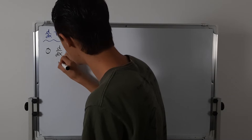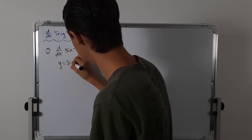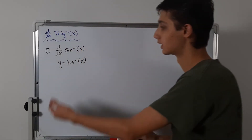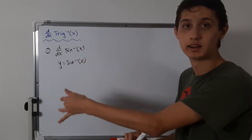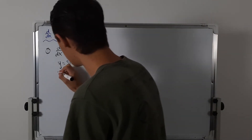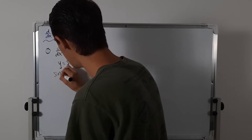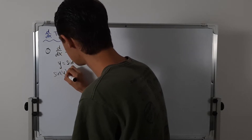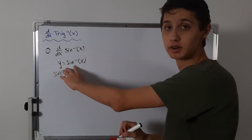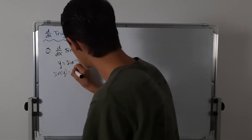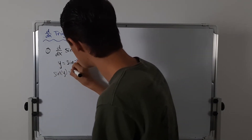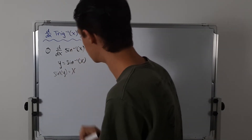So we have y equals sine inverse of x. What we are going to do is take the sine of both sides — sine of this side and sine of that side. This side is going to be sine of y, and the other side is going to be sine of sine inverse of x, which is just going to give us x. So we are just going to have x on this side.